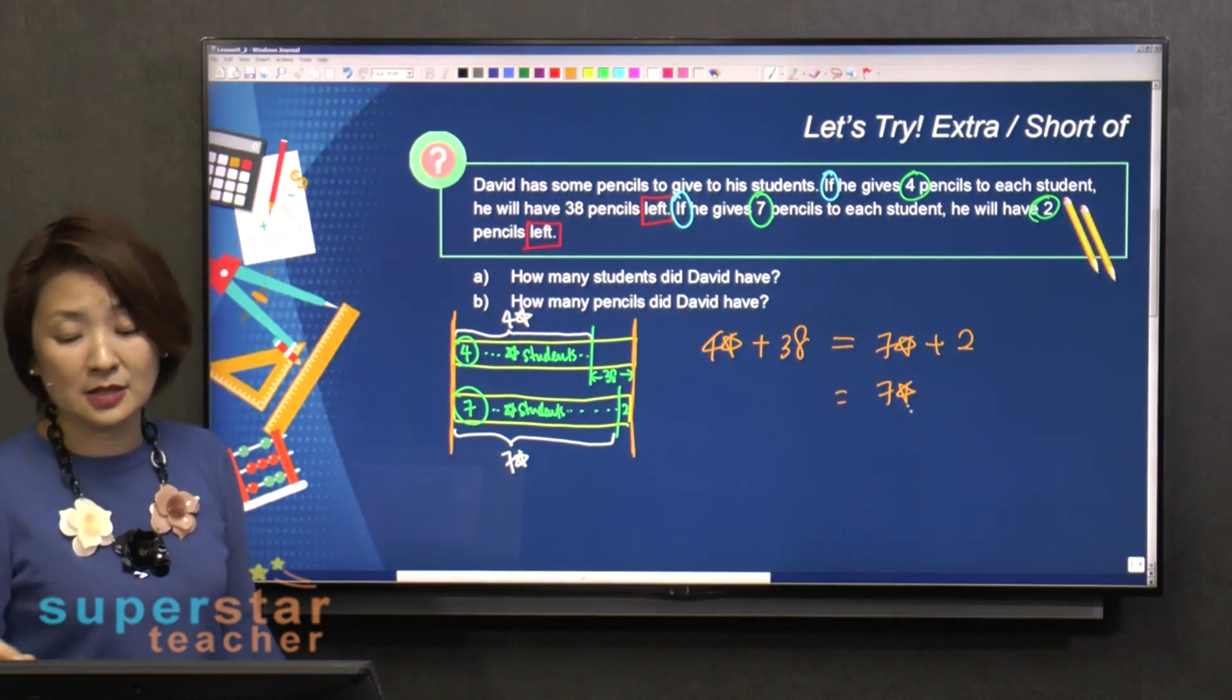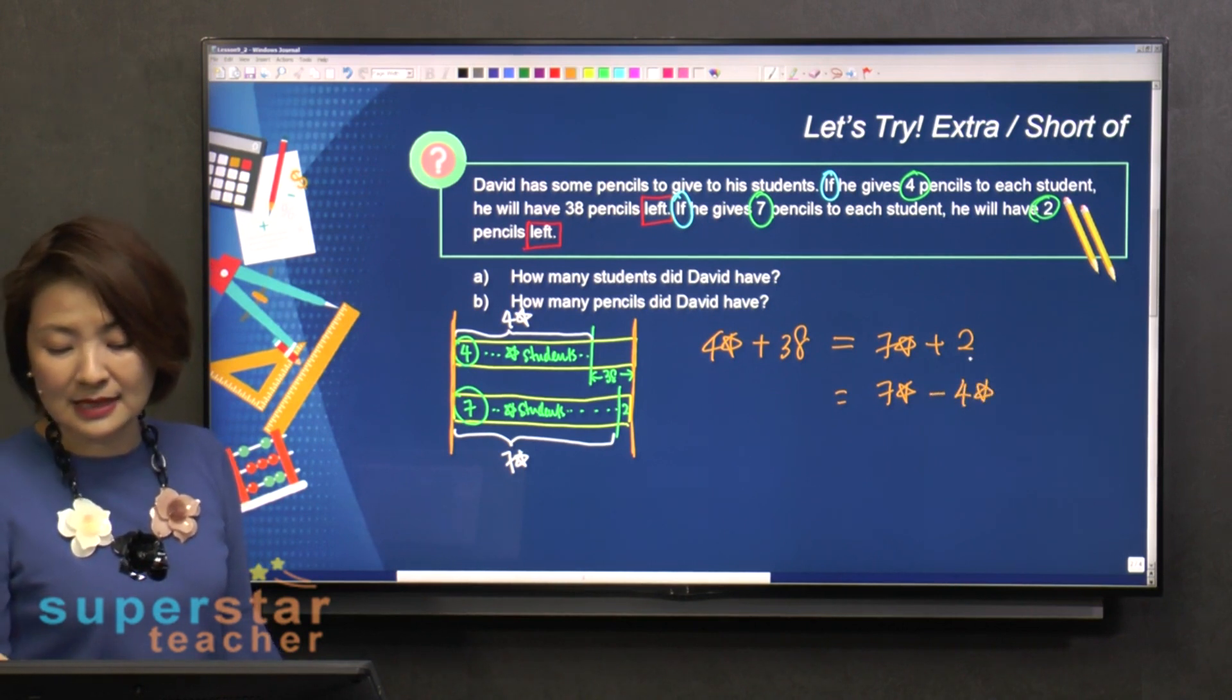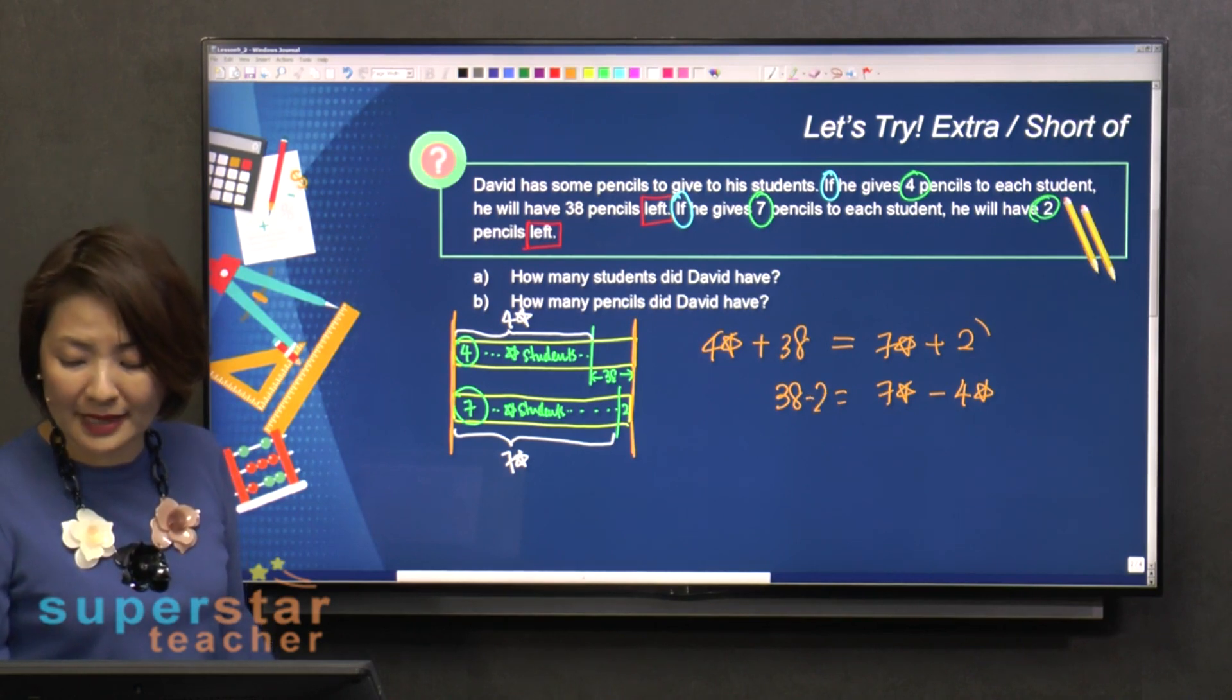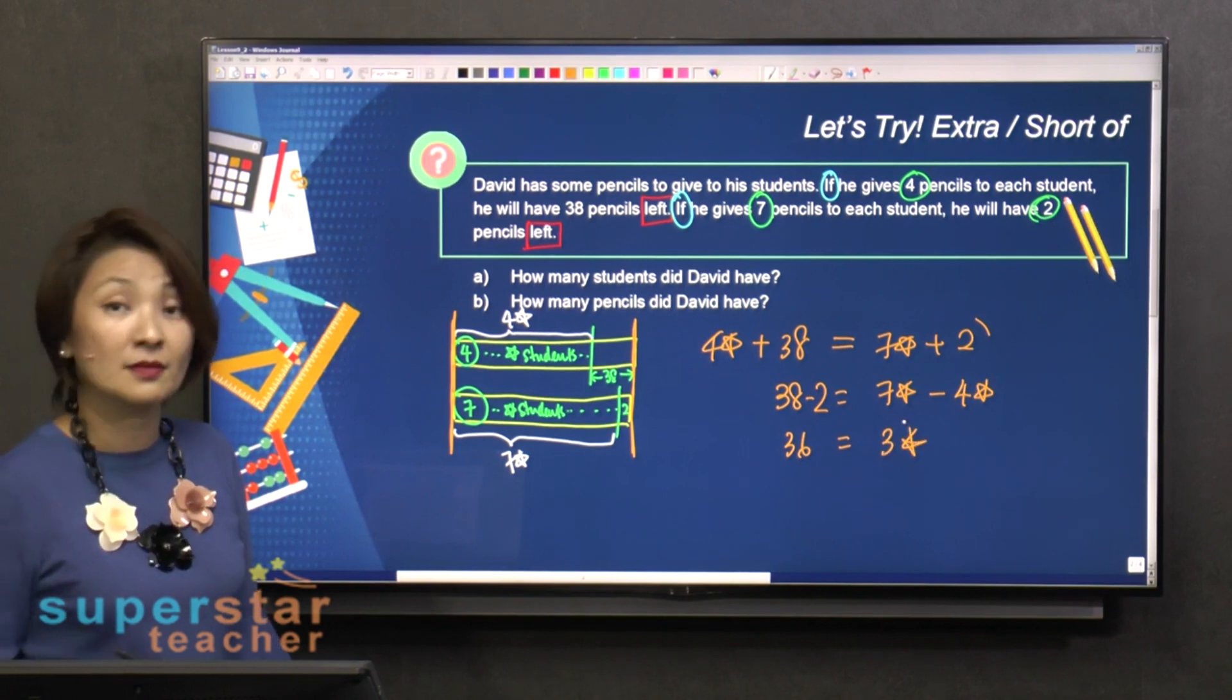Bigger monster stays. Smaller monster crosses over, become minus four stars. 38 stays. This plus two crossover, become minus two. So this is 36, and it's three stars.